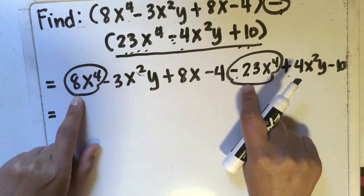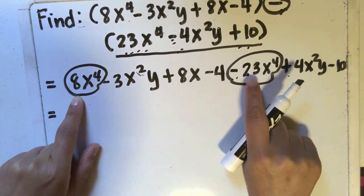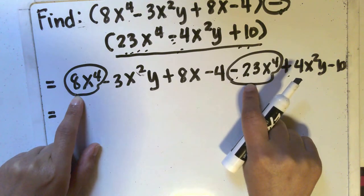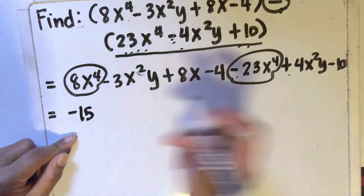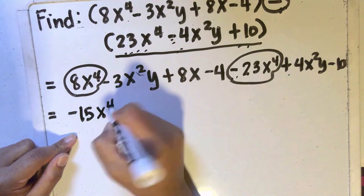Well, that will be equal to 15 but you will copy the sign of the number with the higher absolute value. So we will copy the negative sign because negative 23 has a higher absolute value. So it will be negative 15 and then we will simply copy the variable x to the 4th.